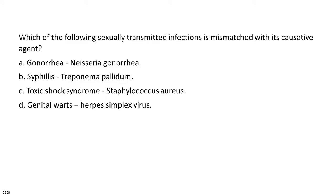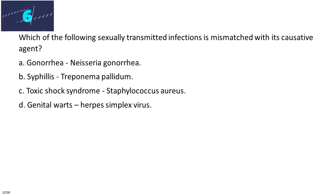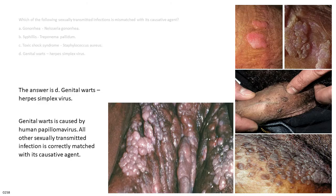Which of the following sexually transmitted infections is mismatched with its causative agent? The answer is D. Genital warts, herpes simplex virus. Genital warts is caused by human papilloma virus. All other sexually transmitted infections are correctly matched with their causative agents.